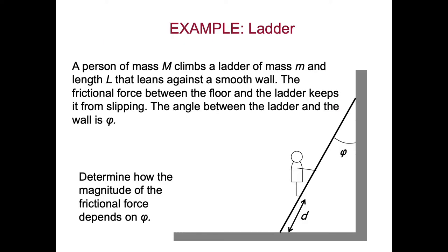Let's do another problem. In this example, we have a person climbing a ladder, and we want to understand the relationships to make that a stable configuration. The person has a mass of capital M, the ladder has a mass of lowercase m and a length of L, and it's leaning against a smooth wall. The frictional force between the floor and the ladder keeps it from slipping, and the angle between the ladder and wall is phi. We want to determine how the magnitude of the friction force depends on phi.